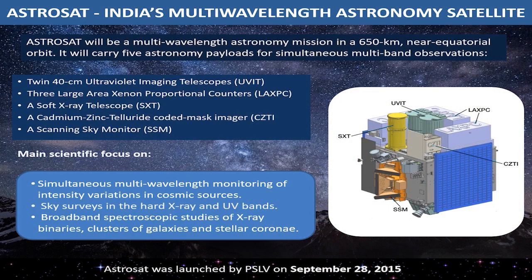AstroSat is India's multi-wavelength astronomy satellite — the first satellite developed and launched for astronomy purposes in India. Placed in a 650-kilometer near-equatorial orbit, it carries five astronomical payloads with different spectral capabilities. Its main scientific focus is simultaneously monitoring intensity variations in cosmic sources across multiple wavelengths, making it the first satellite with this capability. Data from AstroSat is still under review by agencies across the globe.